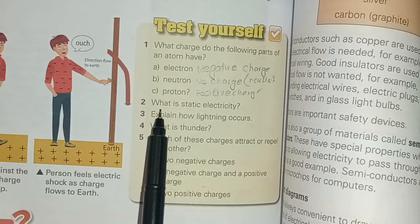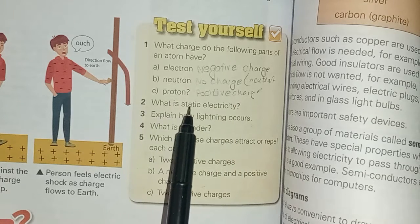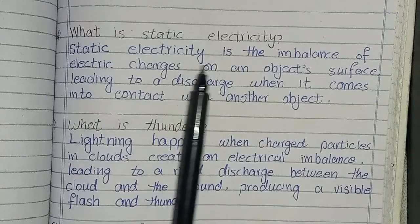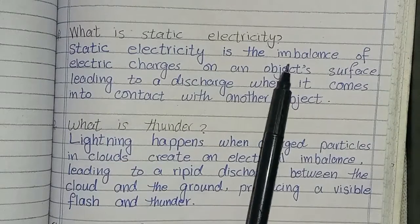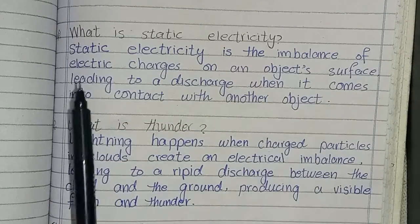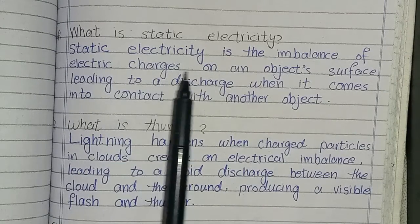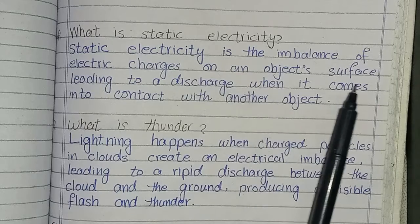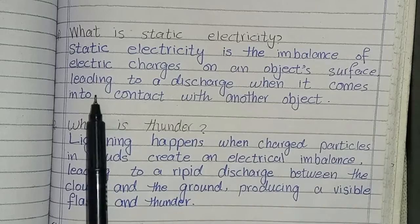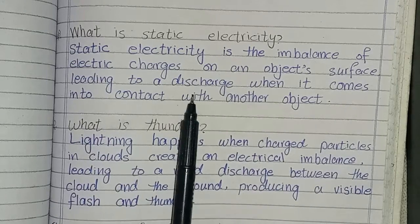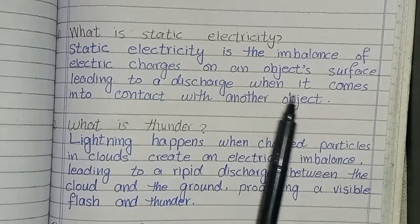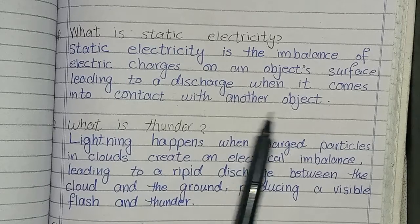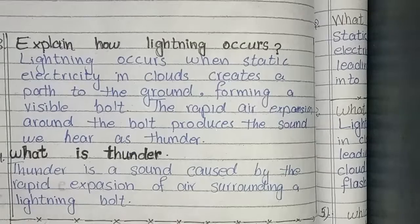Next question: What is static electricity? Static electricity is the imbalance of electric charges on an object's surface, leading to a discharge when it comes into contact with another object.